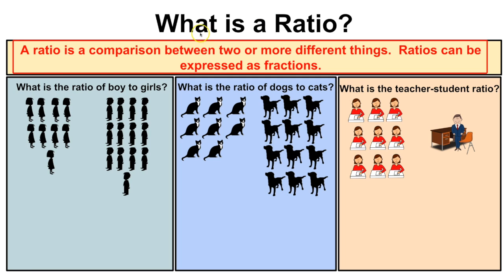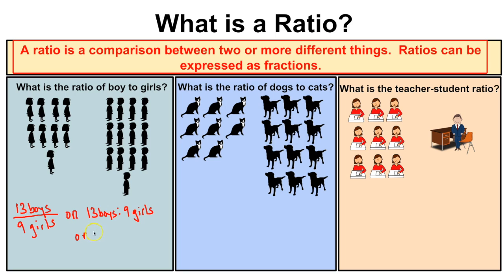So a ratio is a comparison between two or more different things. For example, if we take a look at this first box, if I were to ask what is the ratio of boys to girls — counting up all the boys we see 13 boys, and counting the girls we have 9 girls. So the ratio of boys to girls is 13 to 9, which we can express as a fraction 13/9 or with a colon as 13:9.